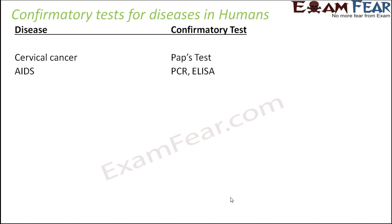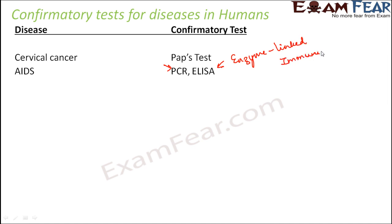For AIDS — Acquired Immune Deficiency Syndrome, caused by the HIV virus and transmitted through sexual contact — the confirmatory tests are PCR (Polymerase Chain Reaction) or ELISA, which stands for Enzyme-Linked Immunosorbent Assay. For genital herpes, the confirmatory test is also PCR — Polymerase Chain Reaction.